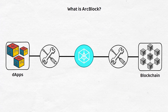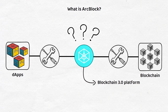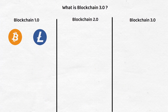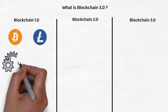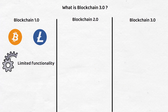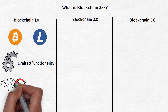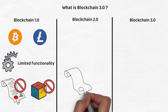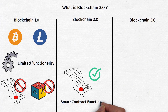ArcBlock refers to itself as a Blockchain 3.0 platform, but what exactly does this mean? To keep it simple, Blockchain 1.0 refers to Bitcoin and blockchains like it, such as Litecoin. These are original blockchains, but they came with limited functionality, meaning no smart contracts for running crypto applications or anything other than a distributed ledger itself. Then, Blockchain 2.0 refers to blockchains with smart contract functionality. This was pioneered by Ethereum and similar blockchains like it, such as Cosmos, Polkadot, Solana, etc.